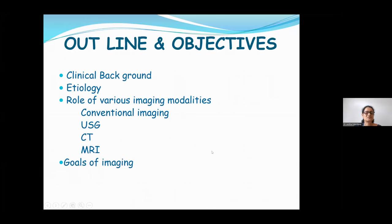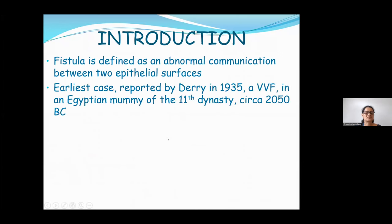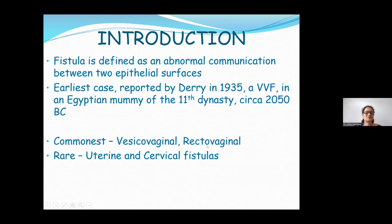A fistula is defined as an abnormal communication between two epithelial surfaces. The earliest case was reported in an Egyptian mummy in 1935 — a vesicovaginal fistula. For a long time the cause of fistulas was prolonged obstructive labor, but with improved obstetric care that is no longer a problem. Now the commonest causes are either inflammatory diseases or malignancies.